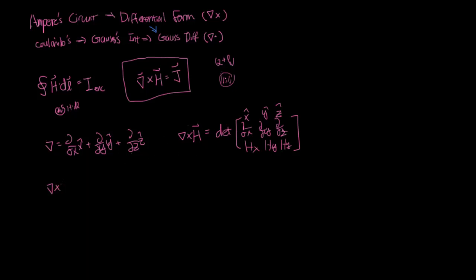So if you evaluate this determinant, you can get the expression here, where d by dy, hz minus d by dz, hy. So let's look at the x direction. You have the x hat vector, and then it's the determinant of this 2 by 2. So d by dy, hz minus d by dz, hy in the x direction,